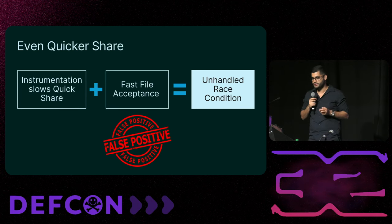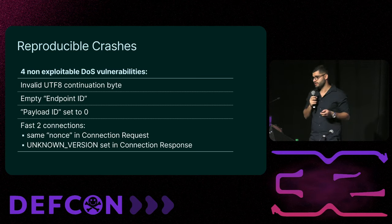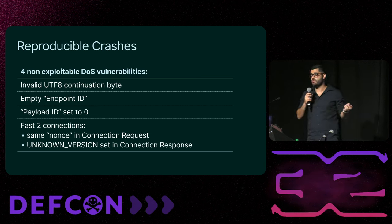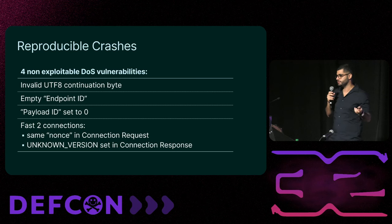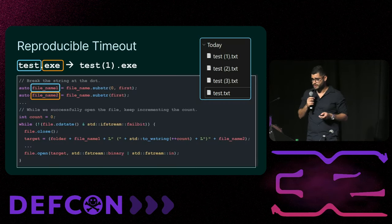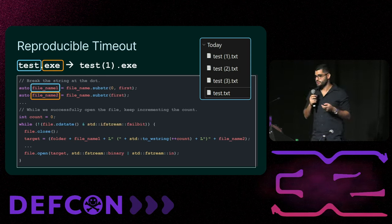Over time the fuzzer did yield several positive results. Overall there were four reproducible crashes. We attempted to explore further exploitation of those crashes, but they are unlikely to be exploited — though having the ability to crash QuickShare might be handy in the future.